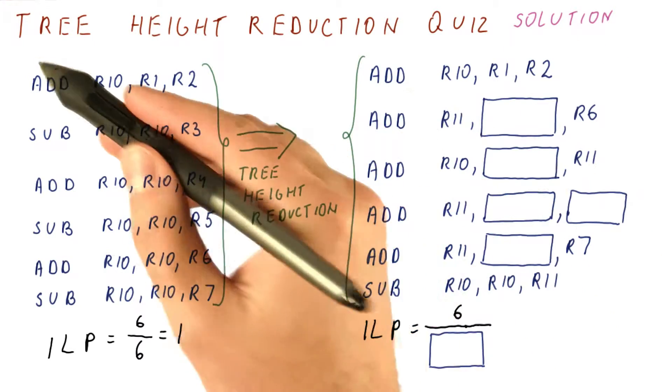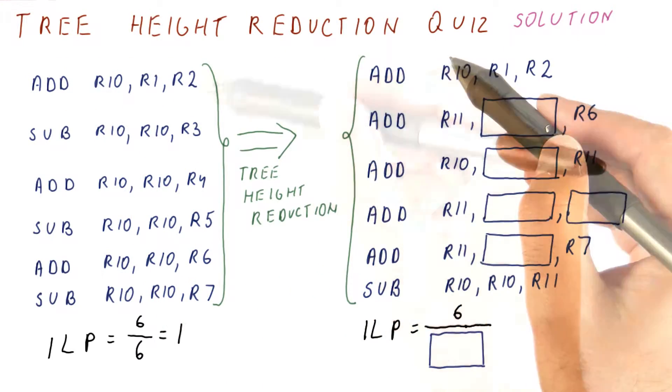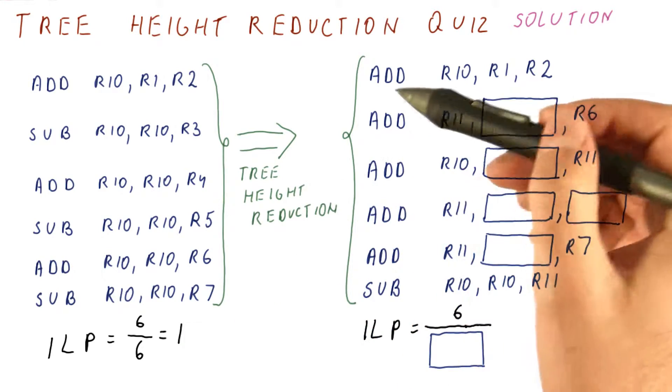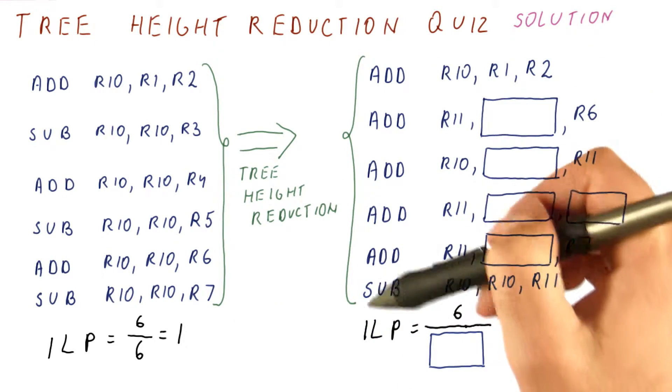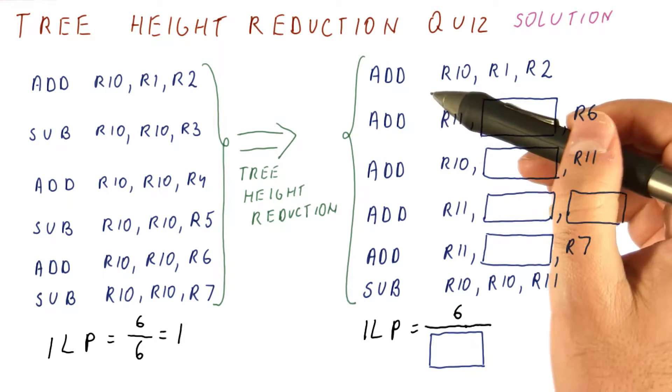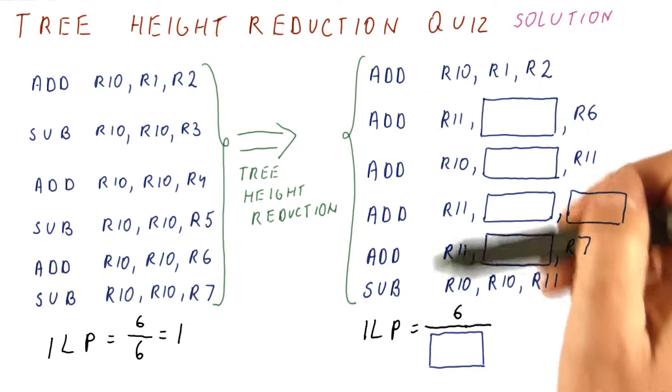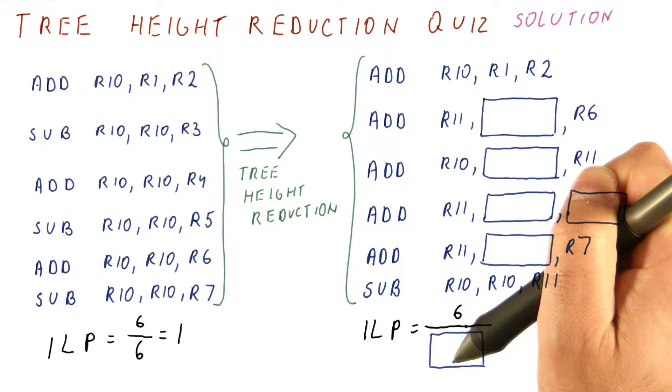Let's look at the solution to our tree height reduction quiz. We had this code and we are trying to transform it through tree height reduction into something that minimizes the overall number of cycles it takes to execute this code.